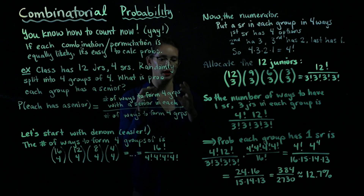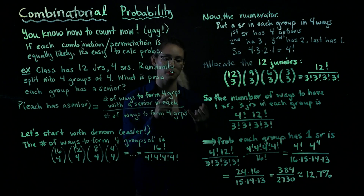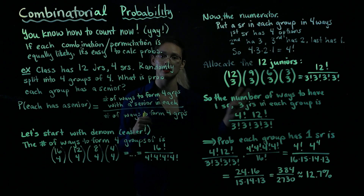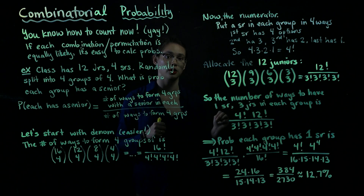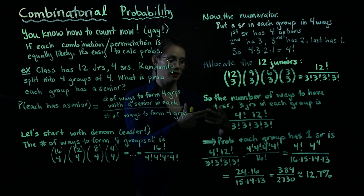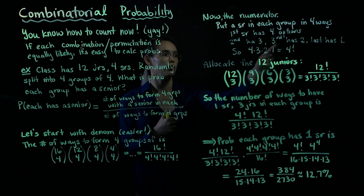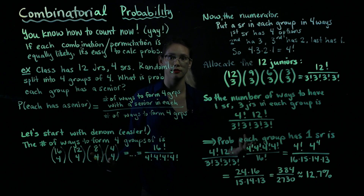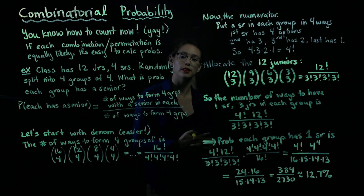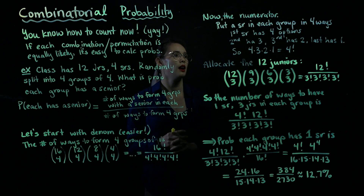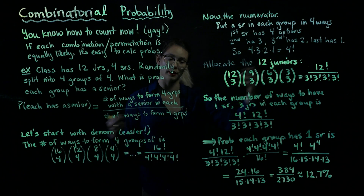For the first senior, we ask which group they want to be in — A, B, C, or D — so the first senior has four options, since none of the groups have a senior yet. The second senior will have three options, because they have to go into a group that doesn't already have a senior. The third senior has two options, and the last senior has just one option — that senior has to go into the group that does not yet have a senior. Using the multiplication rule: four times three times two times one, which is four factorial.